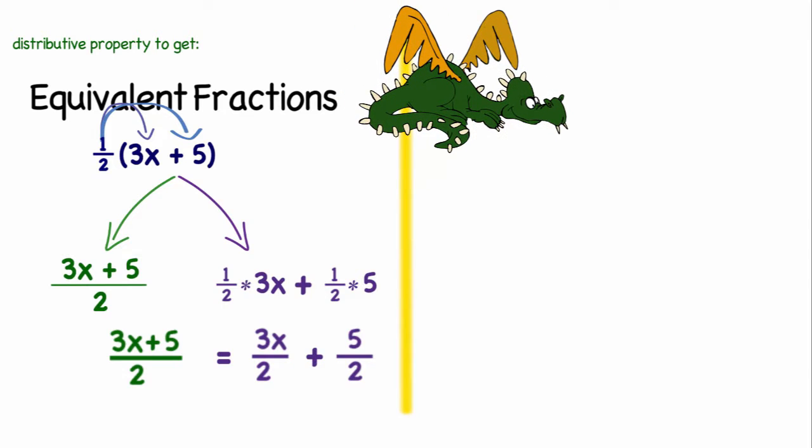Okay so that's one example. Let's go ahead and try to generalize that by using variables. So I'm going to start with the situation a plus b over c. Well that's the same thing as saying 1 over c times a plus b.